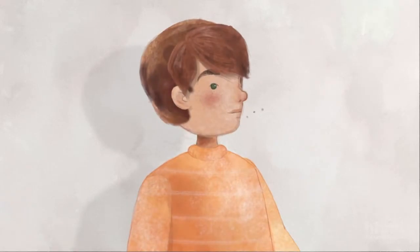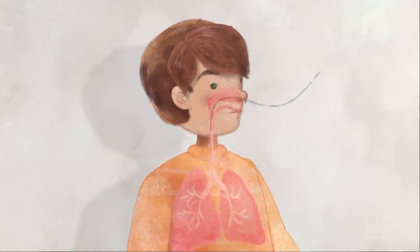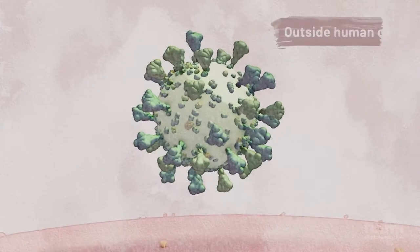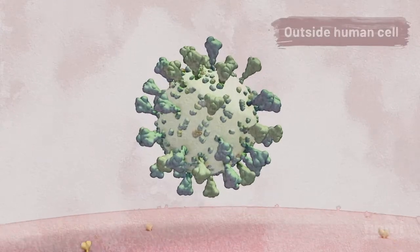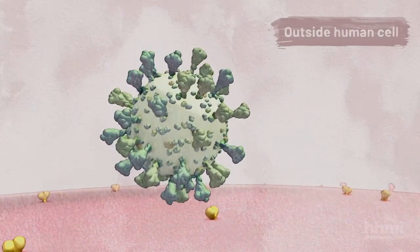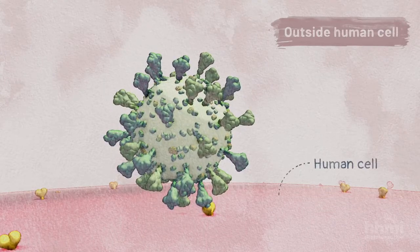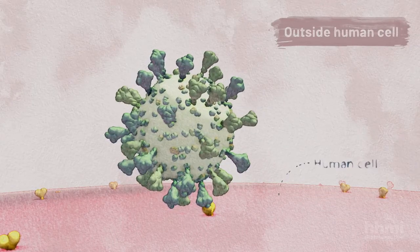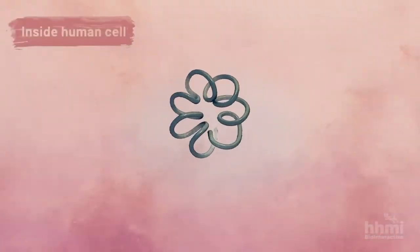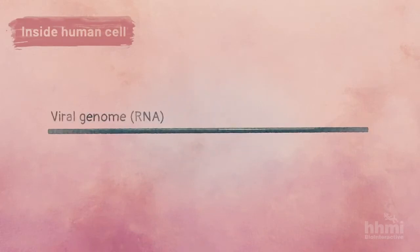Coronaviruses enter the body mainly through the mouth or nose. The virus then has to get inside a human cell. The protein spikes in the virus's envelope attach to specific proteins on the surface of a cell. This causes the virus's membrane to fuse with the cell's membrane, releasing the virus's RNA genome into the cell.